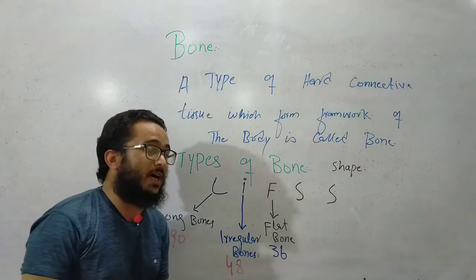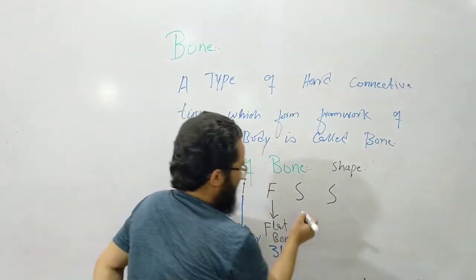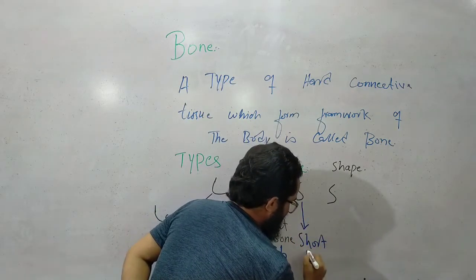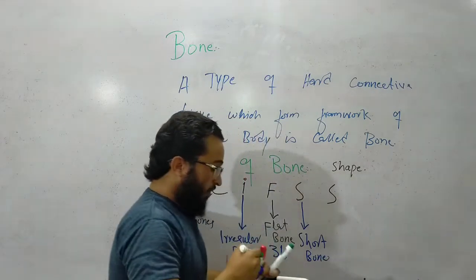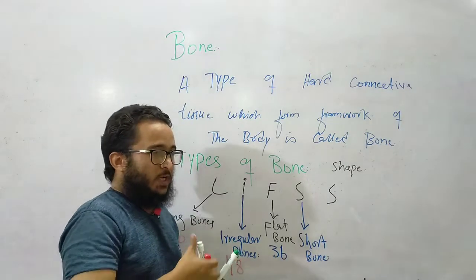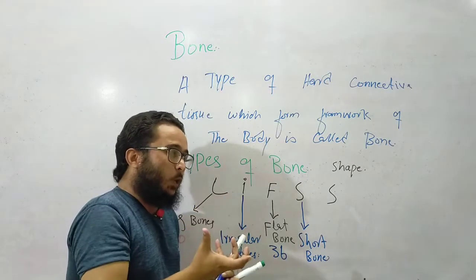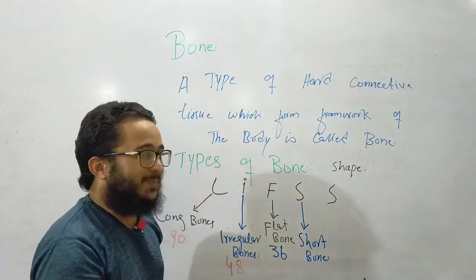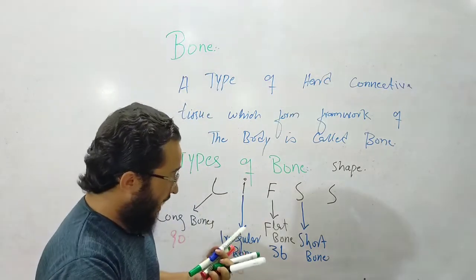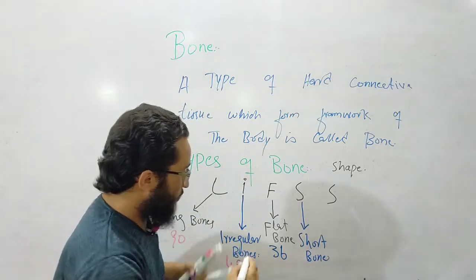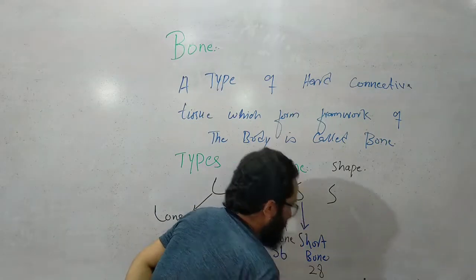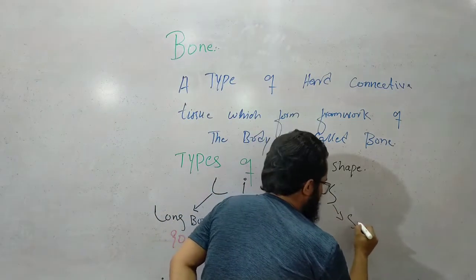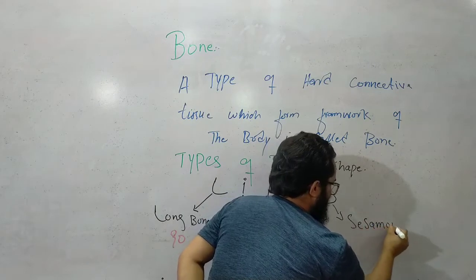S means short bone, short bones. These are small bones. Not long, irregular, or flat, but short bones. These are small bones found in the wrist and ankle sections. There are only four bones of this type called sesamoid bones.